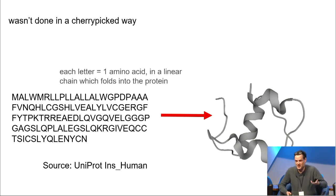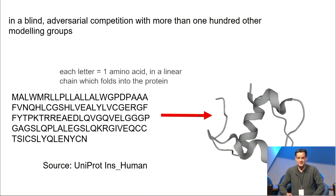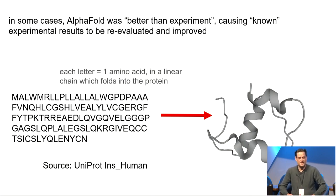So the first thing you might wonder, obviously you might be a little bit skeptical of this, you might wonder if maybe the modelers were fooling themselves thinking that this was done in a cherry-picked way. It wasn't, in fact, it was done in a blind adversarial competition with more than 100 other modelling groups. In some cases, in fact, AlphaFold was better than experiment, it caused known experimental results to be re-evaluated and actually improved. This wasn't generically the case, it was just the case for a few of the structures.